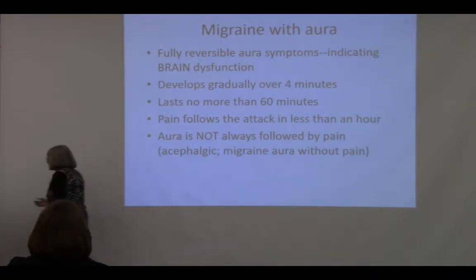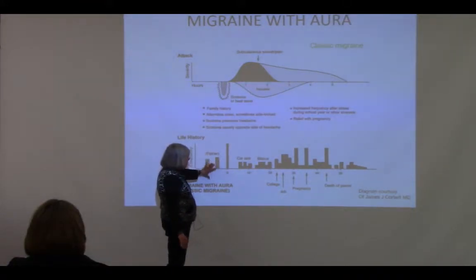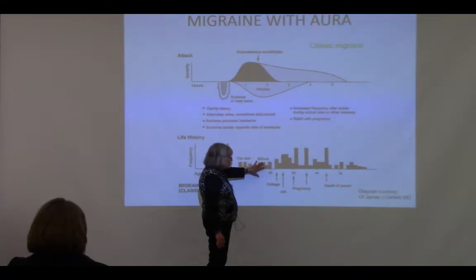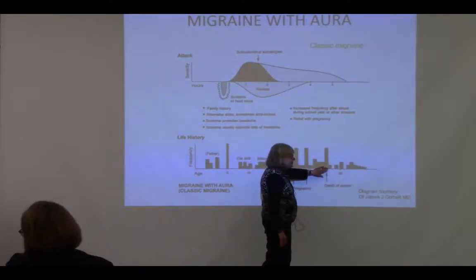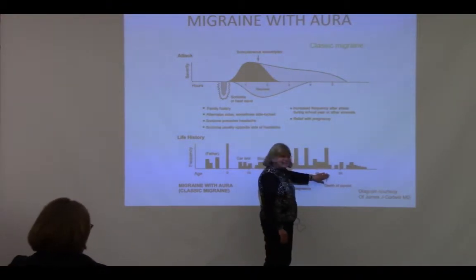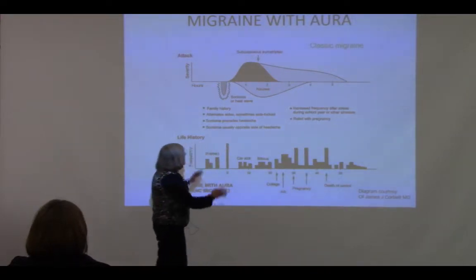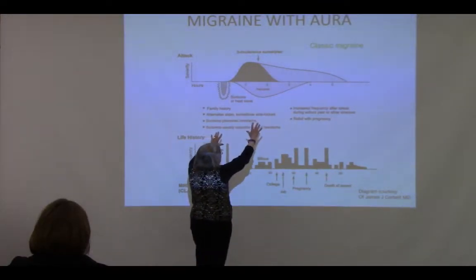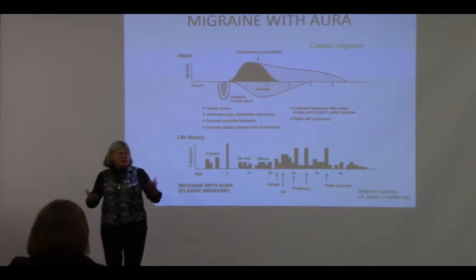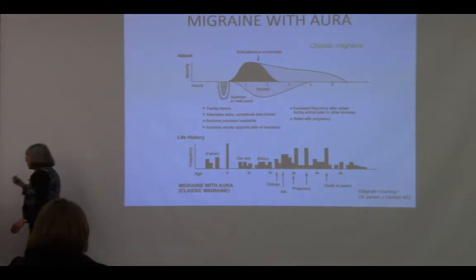When we see patients, we ask about family history. Headaches often get worse at various points in life — going to college, getting a job, getting pregnant, stressful life events like the death of a parent. Looking at the timeline, the aura — the scotoma, the heat wave — comes on, then the headache follows. This is migraine with aura. There's also migraine without aura, where you don't get the aura before the attack.